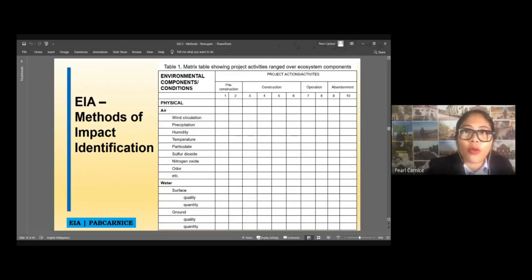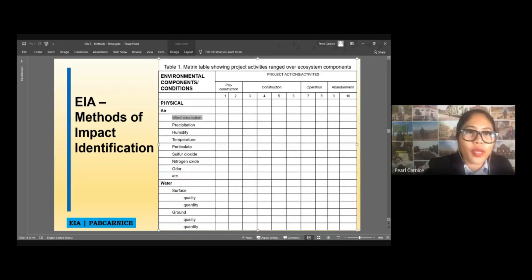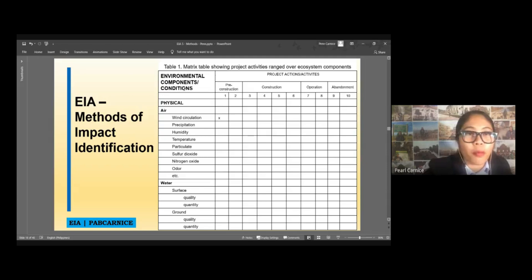And then, this is the matrix table, showing project activities range over ecosystem components. For example, we have wind circulation under the air or under the physical. We will check if one, two, three, four actually is a number of the actions. So, for example, wind circulation, we will be doing that during the pre-construction. So, we have to put a check to that. On my case, I'll put X. During the construction, are we going to do a wind circulation assessment?